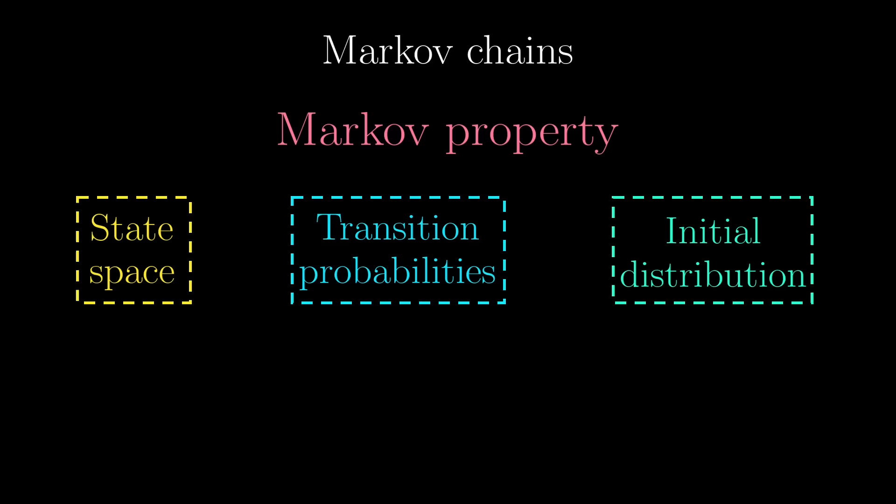Wait, didn't you say it doesn't matter where you started for the 2D case? Don't worry, I'll get there in a minute. These are the three elements in the Markov chain, but there is one key feature that makes it a Markov chain, the Markov property.